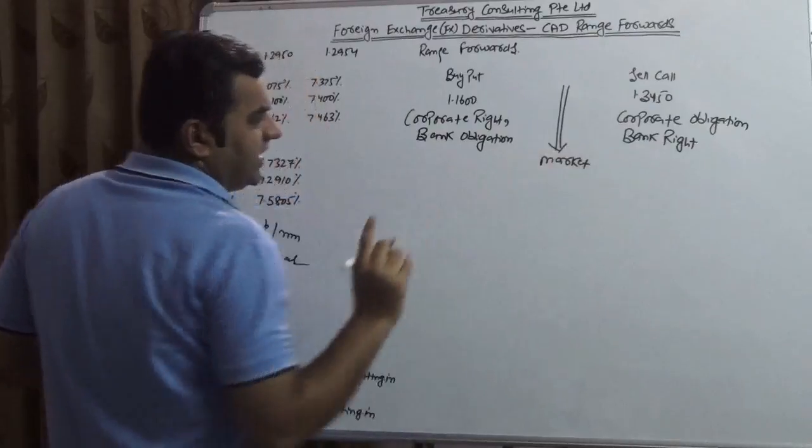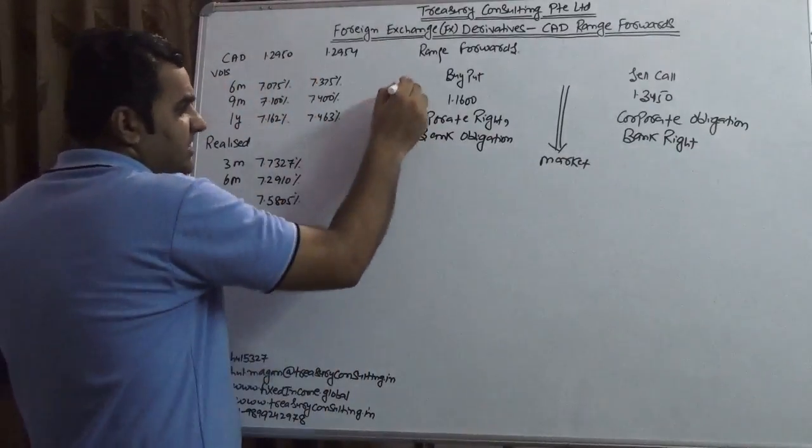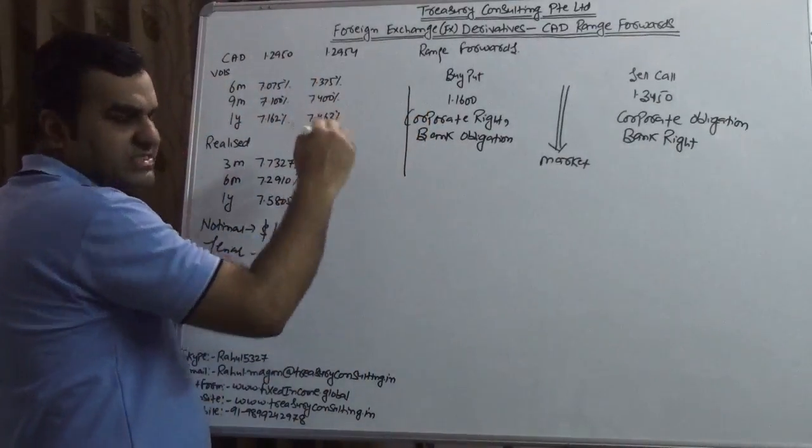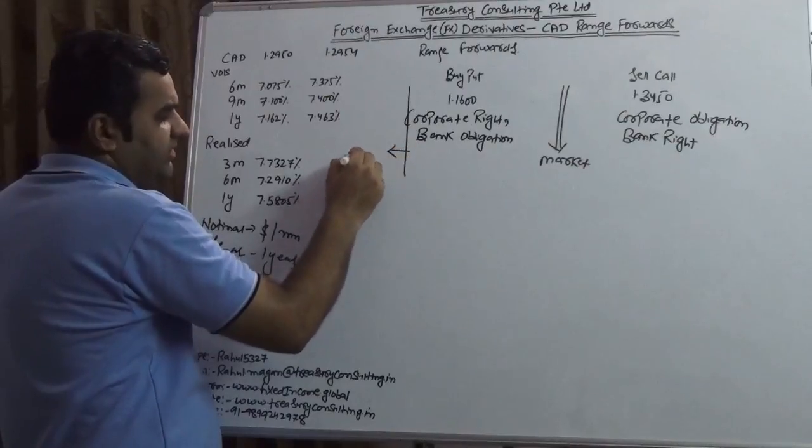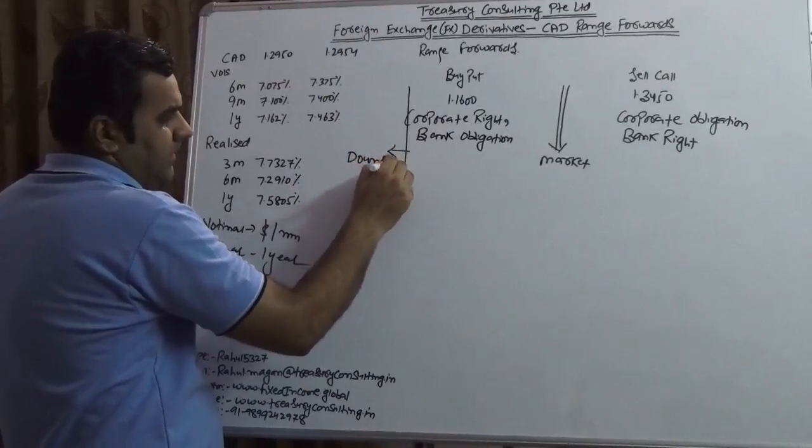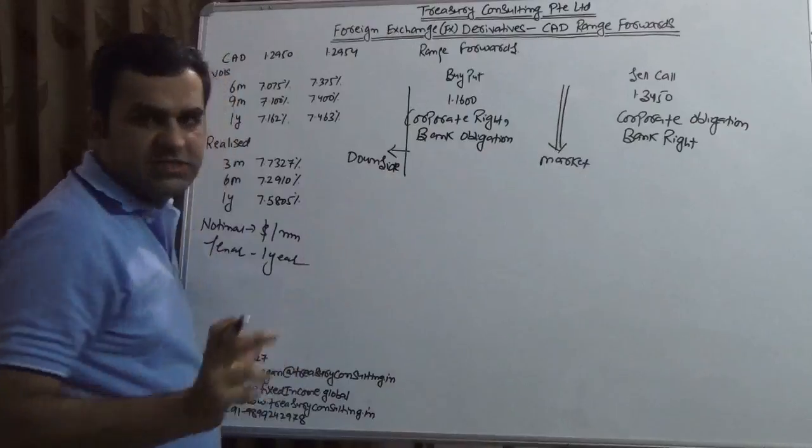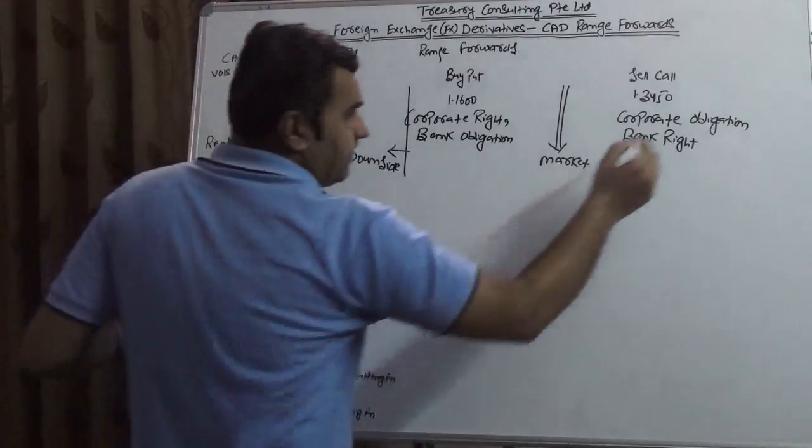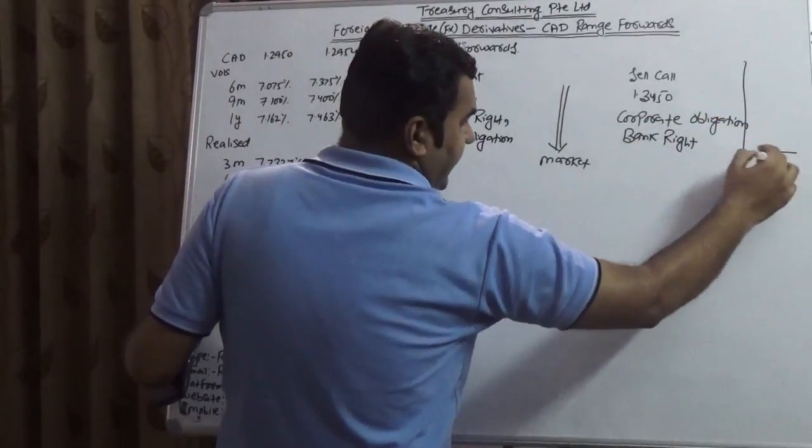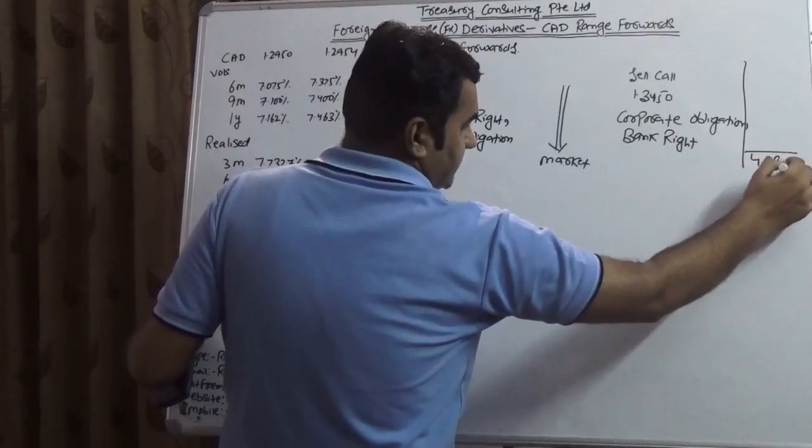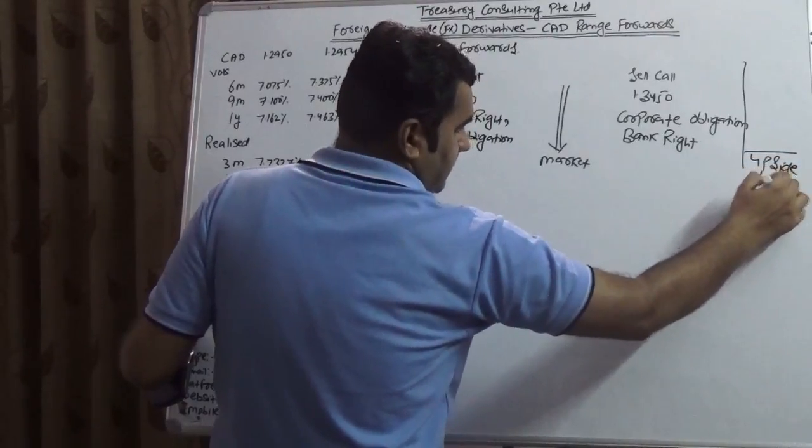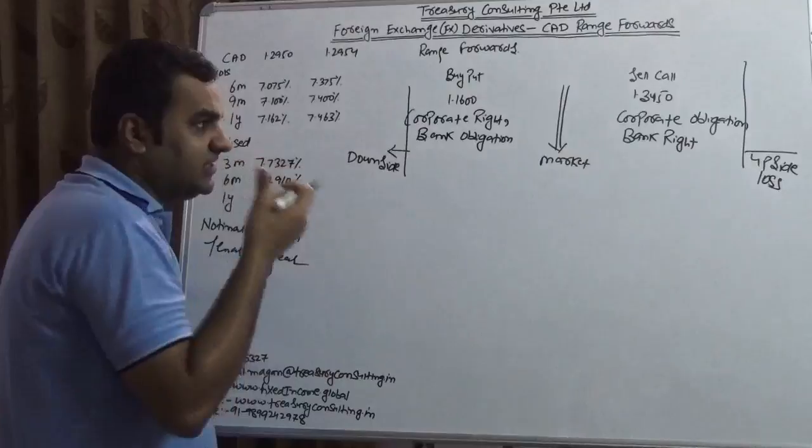Now in the range forward there are three legs. This which is less than 1.16 means the downside protection. This is market which I have already told you. And this means upside loss. Now this is how it actually would happen.